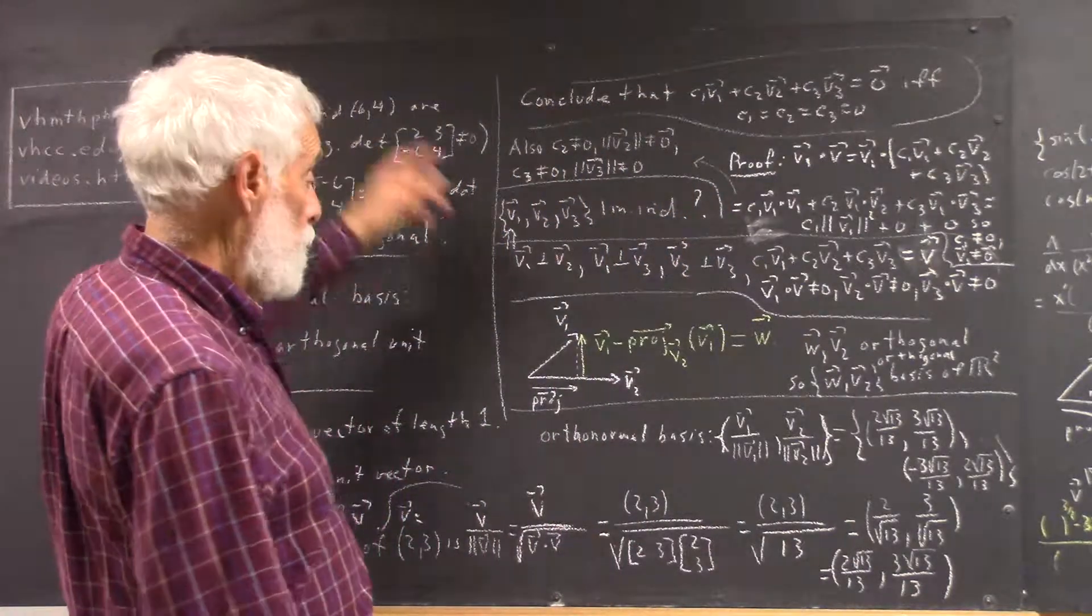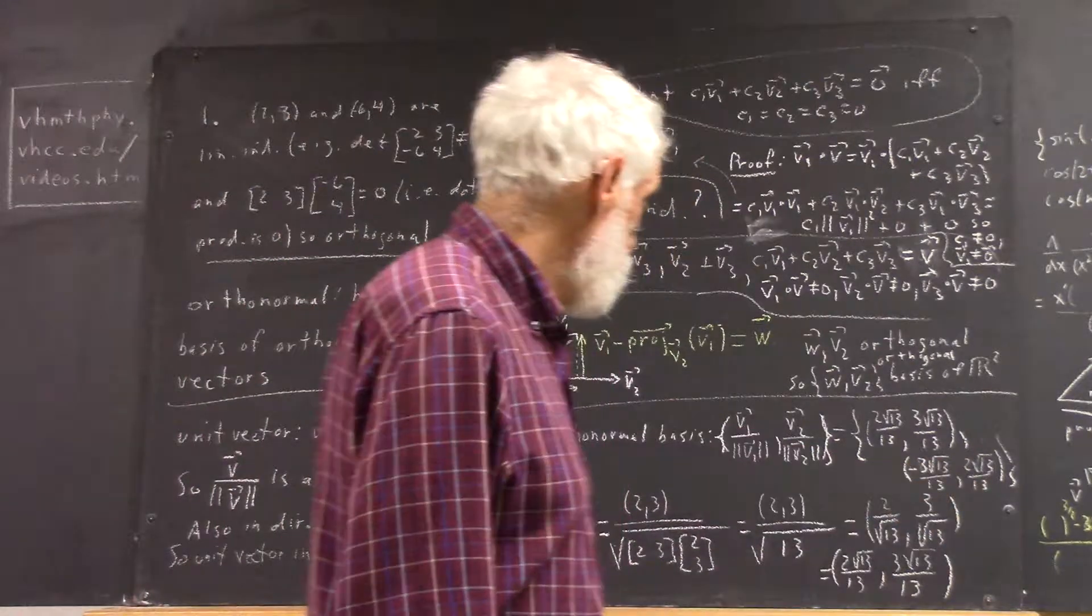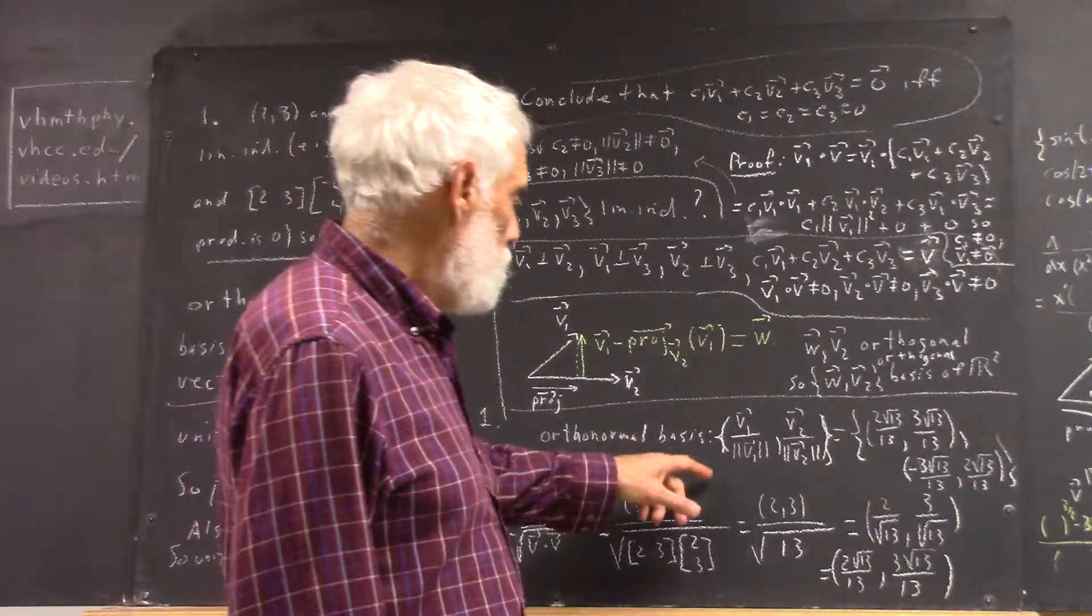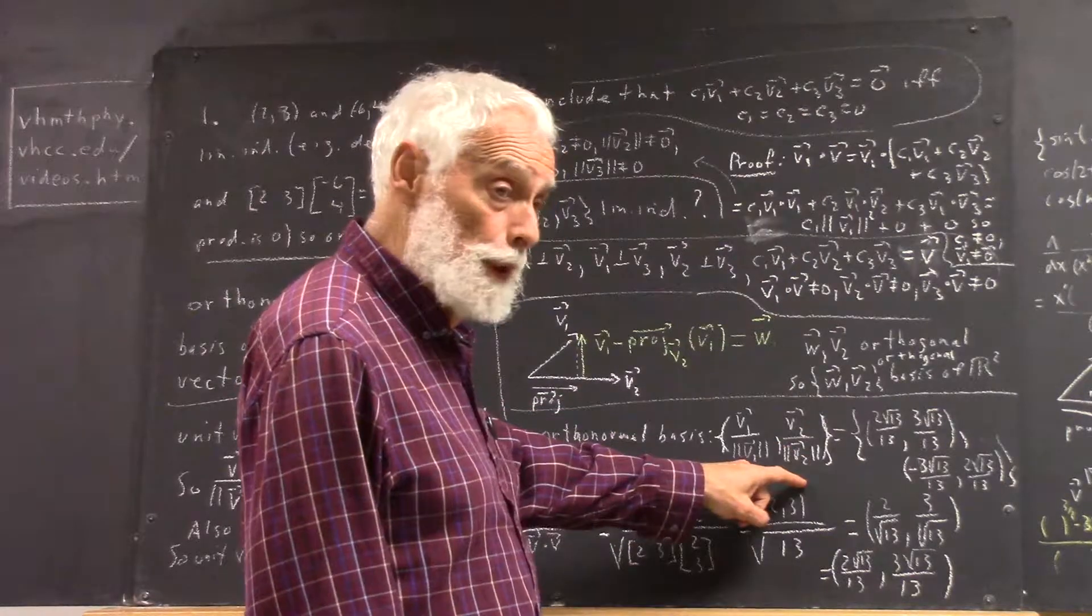And you can work that through the same way we worked this one through. This comes out in a very straightforward manner. So, your orthonormal basis is then V1 over magnitude of V1, V2 over magnitude of V2.